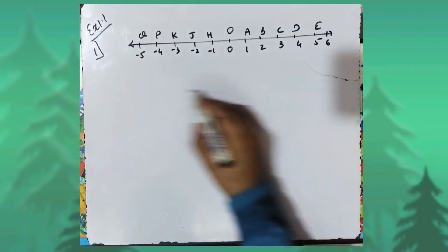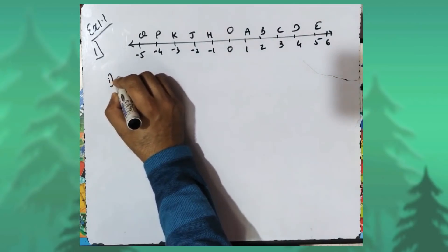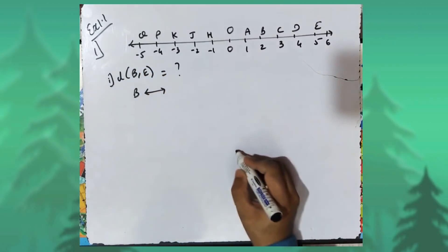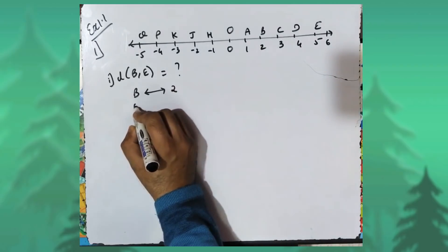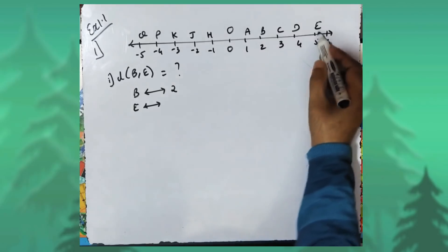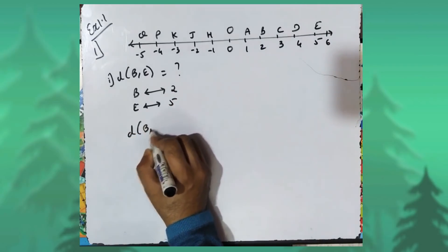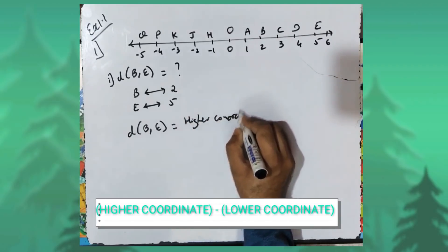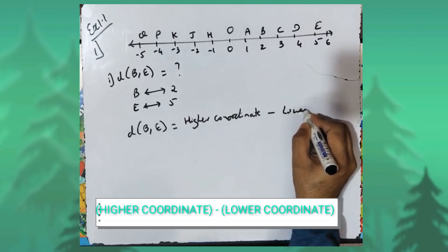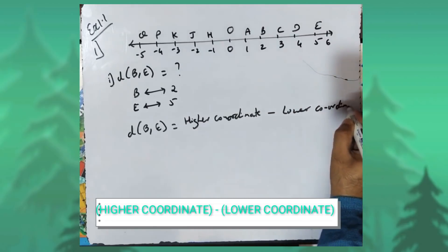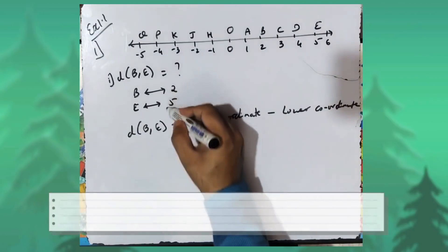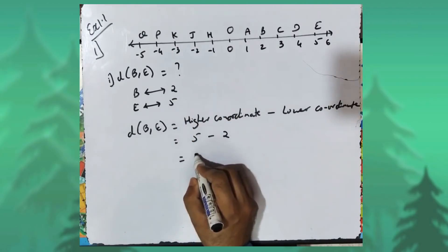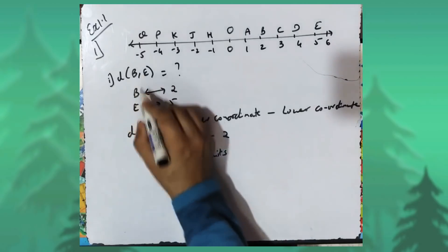We have to find distance BE. The coordinate of point B is two and the coordinate of E is five. Distance BE will be found using the formula: higher coordinate minus lower coordinate. Here the higher coordinate is five and the lower coordinate is two, so five minus two equals three units. Distance BE is equal to three units.